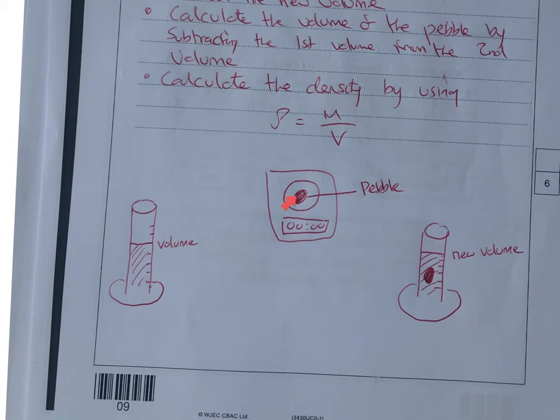To calculate the volume of the pebble, you'd simply take the last volume away from the original. Then you're going to use your density equation. You've got your mass, that's the first thing we got. We measured our volume by using the displacement of the water. If this was 50 centimeters cubed and this was 70 centimeters cubed, then take 50 from 70 and the actual volume of the pebble is going to be 20.